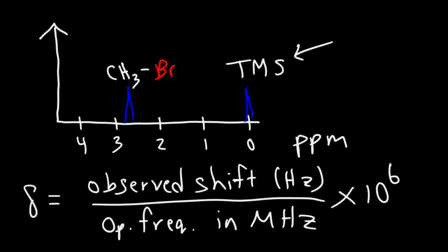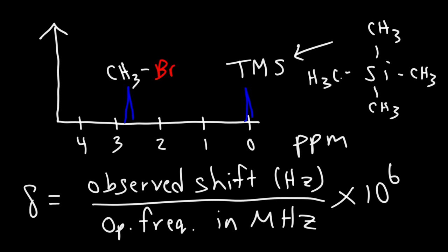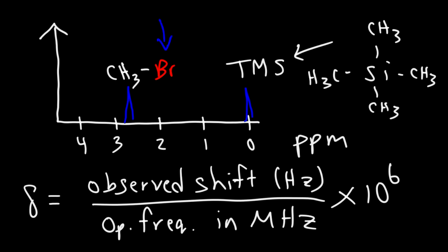What we have here is a reference signal, TMS, also known as tetramethylsilane. It's basically a silicon atom with four methyl groups. On the right, we have methyl bromide. Notice that methyl bromide has a higher chemical shift than TMS. The reason for that is because bromine is more electronegative than silicon. Because the protons are next to an electron-withdrawing group, they will have a higher chemical shift. Thus, they will appear downfield on the NMR spectrum, which is basically the left side. Upfield is towards the right side. The protons that are shielded to an external magnetic field will appear upfield; the ones that are deshielded will appear downfield, which is due to the presence of an electron-withdrawing group.